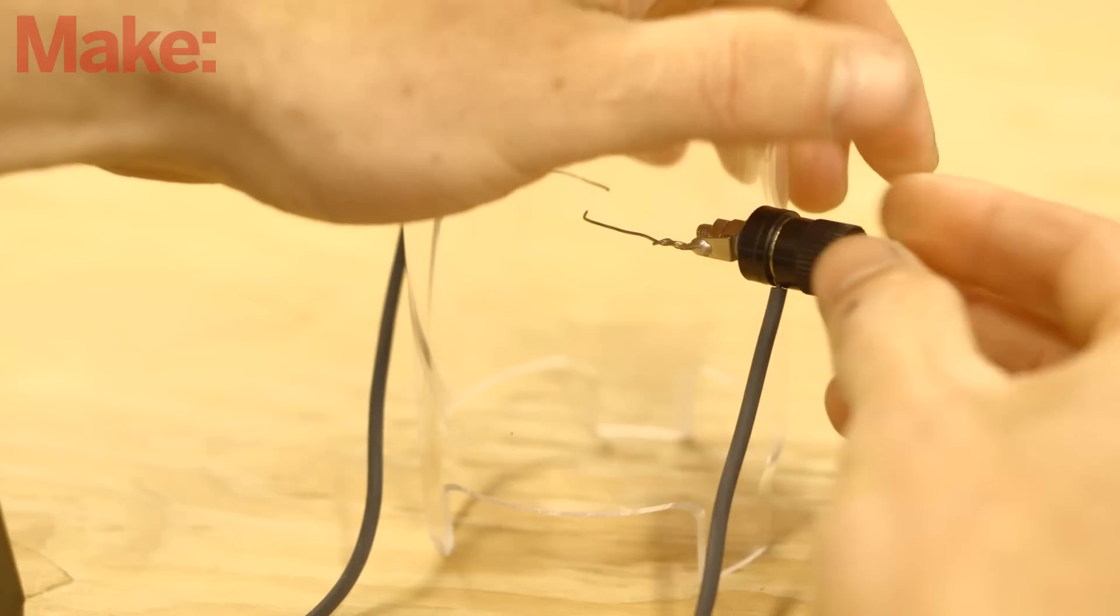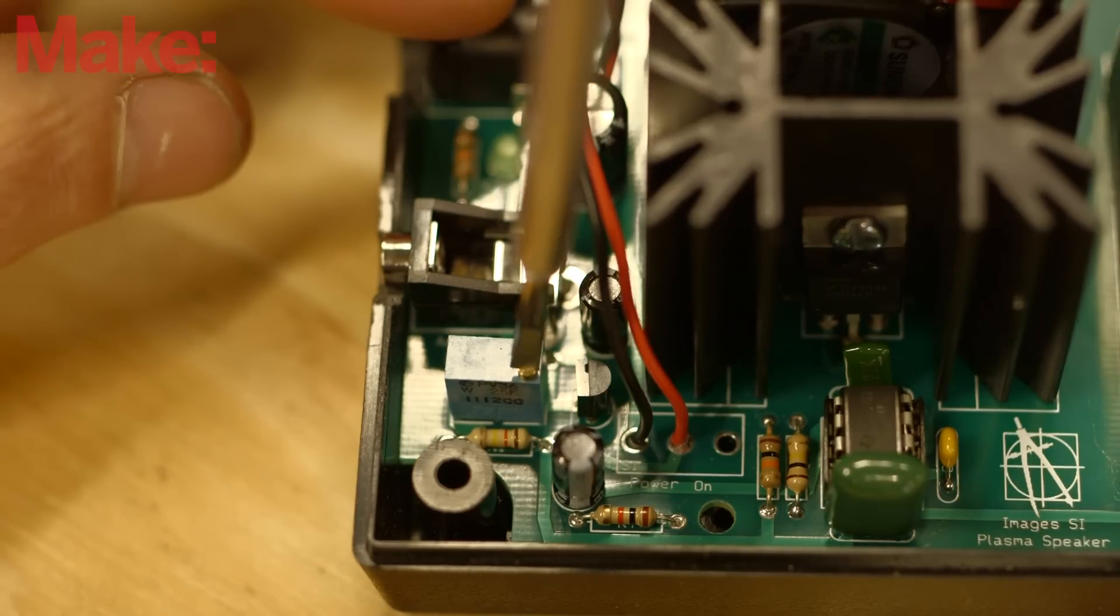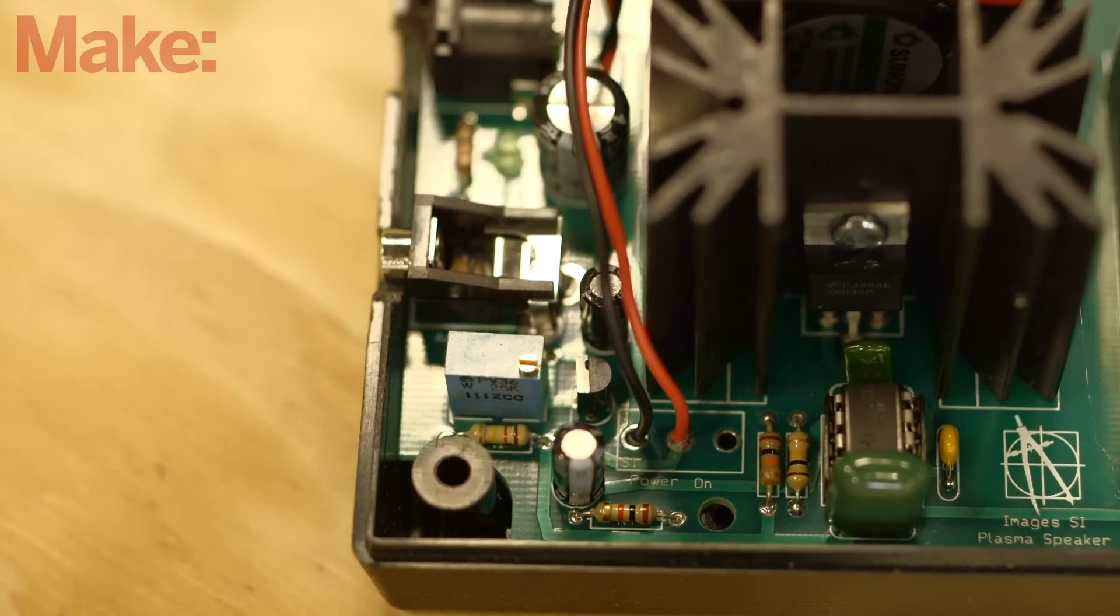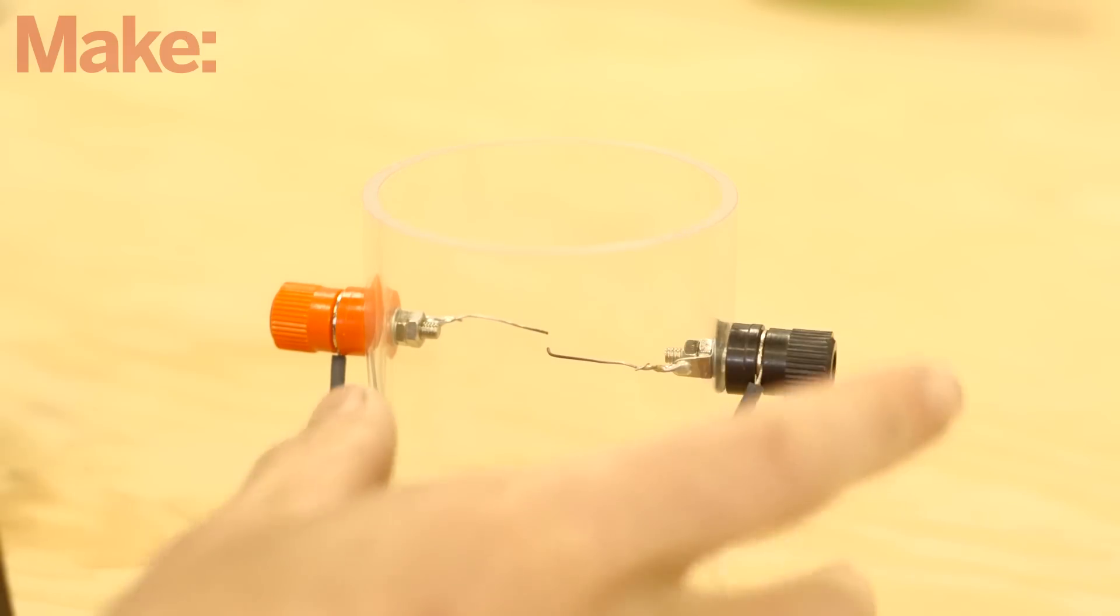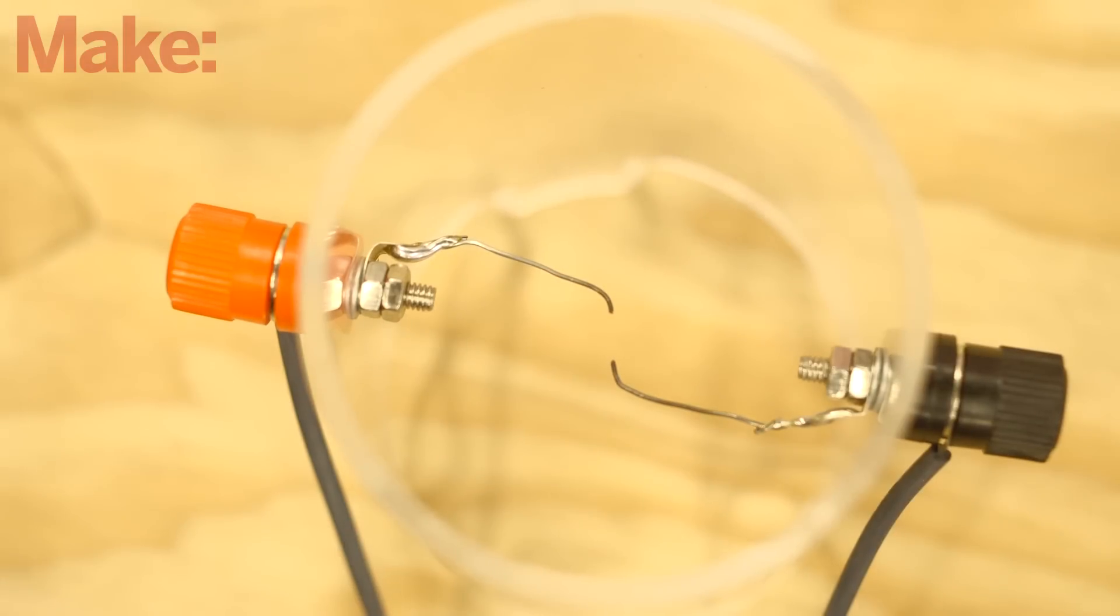Next, you'll attach the high voltage wires from the transformer to these terminals. Set the trim potentiometer to its center position and you're almost there. The last thing to do is adjust the electrodes. Arrange the wire so that the wire ends face each other. If the arc jumps from the side of the wire, you'll hear distortion.